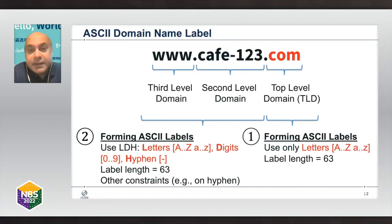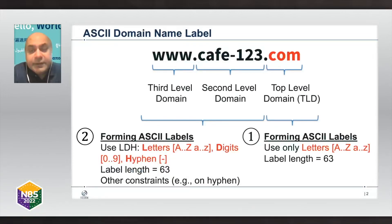Each of these labels has specific rules which they need to follow for domain names to be valid. For second and third level labels, the label must be formed by letters A–Z, digits 0–9, and hyphens. The length of a label cannot be more than 63 characters. There are also other constraints — for example, a label cannot start with a hyphen.